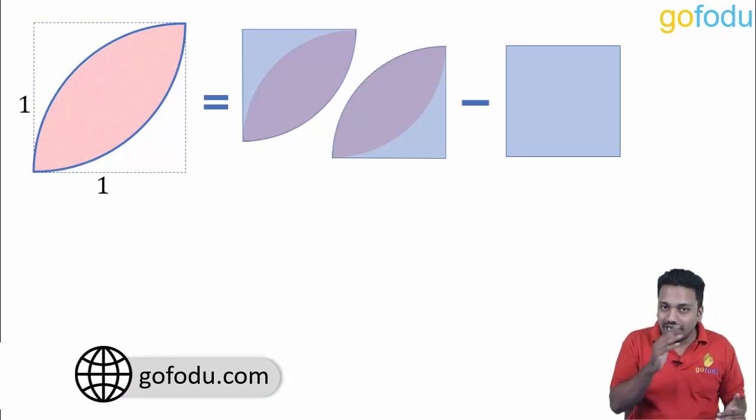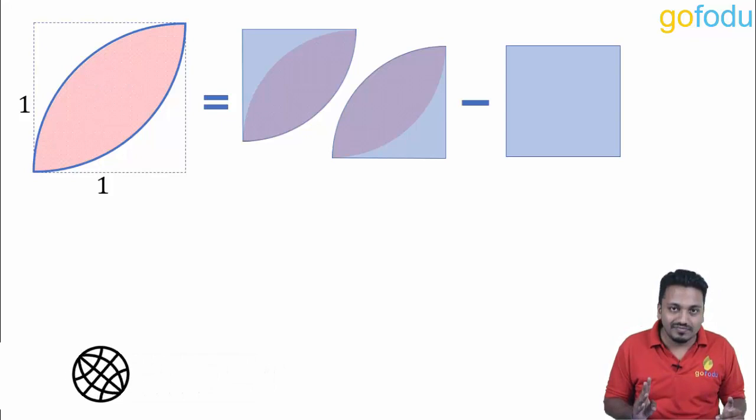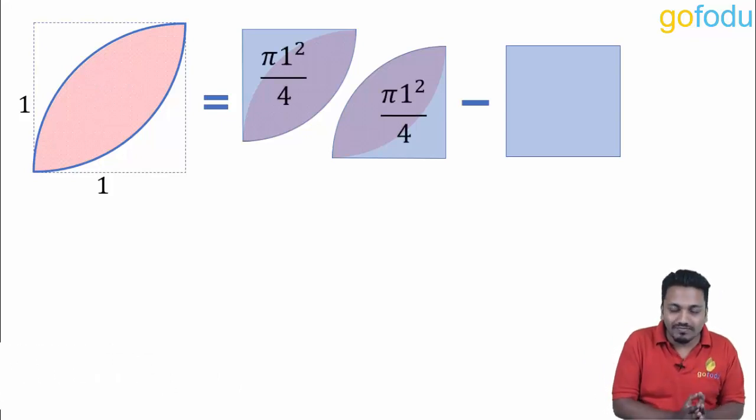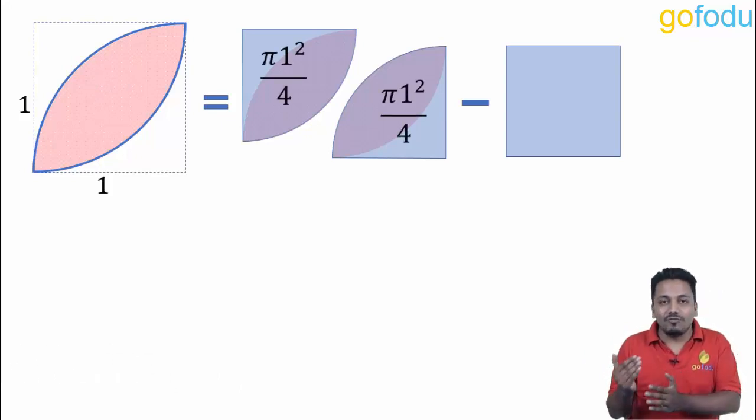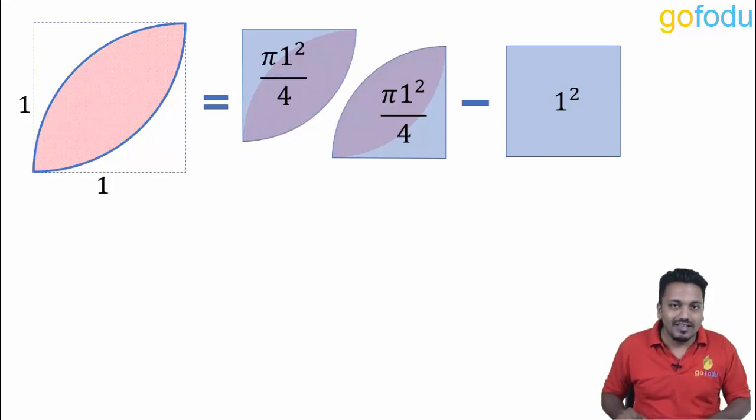Area of quarter circle is area of complete circle upon four. So pi r square upon four minus the area of square, that is one square. Pi by two minus one is the answer.